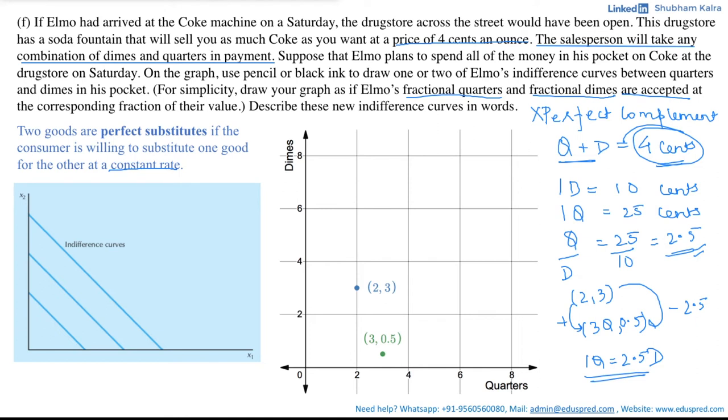And as we know that the perfect substitutes have the indifference curve in the form of straight line, now we have two points and we know that a unique line passes through the two points. Thus, joining and extending the line, your indifference curve will look like this. Where this black line is the indifference curve and it is passing through the point 2,3 and 3,0.5. Likewise, you can draw another indifference curve which is just parallel to this one. So, these are your indifference curves for Elmo.